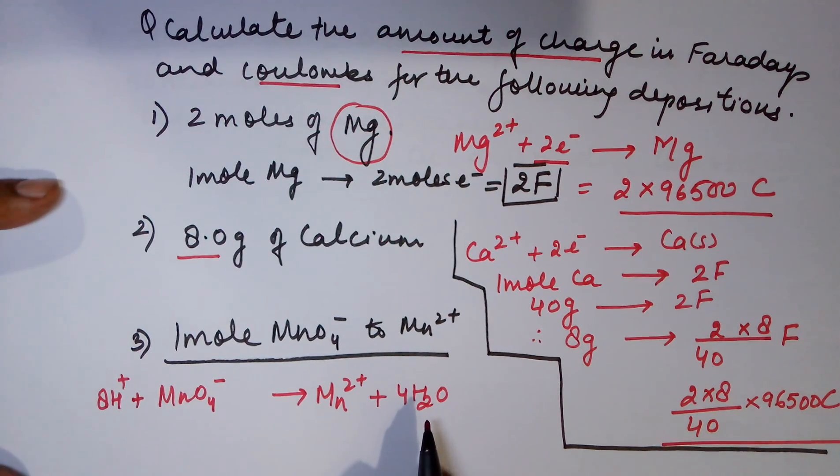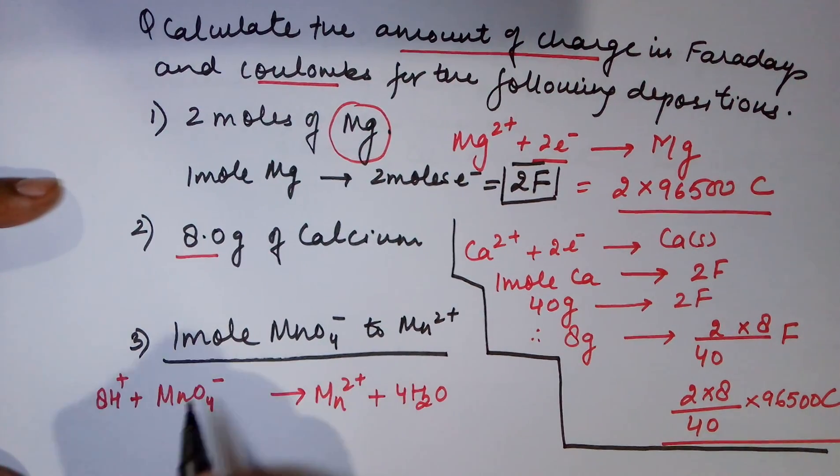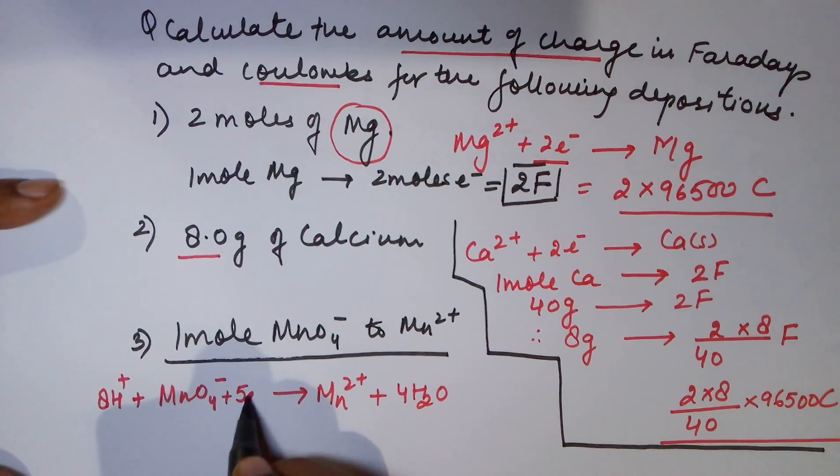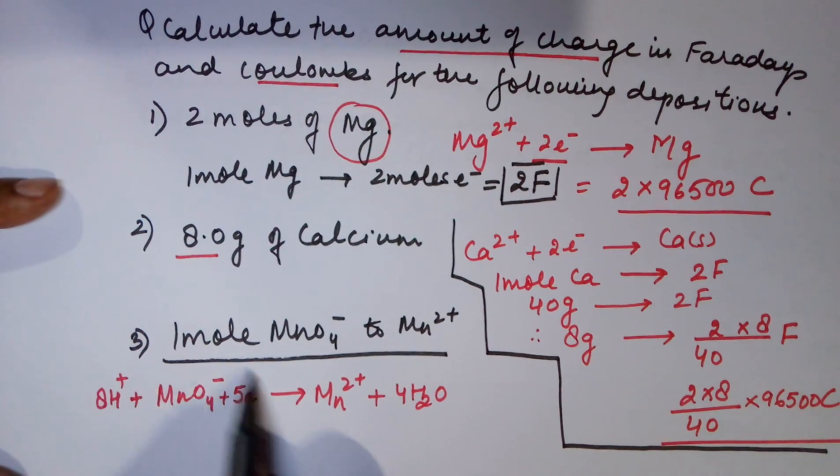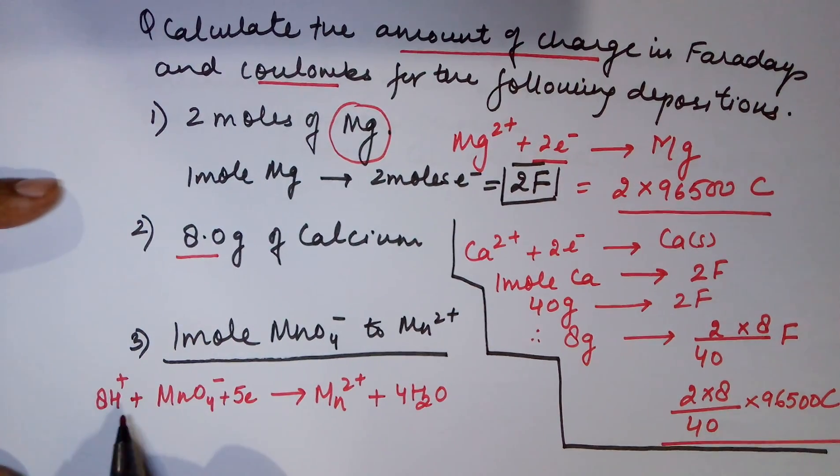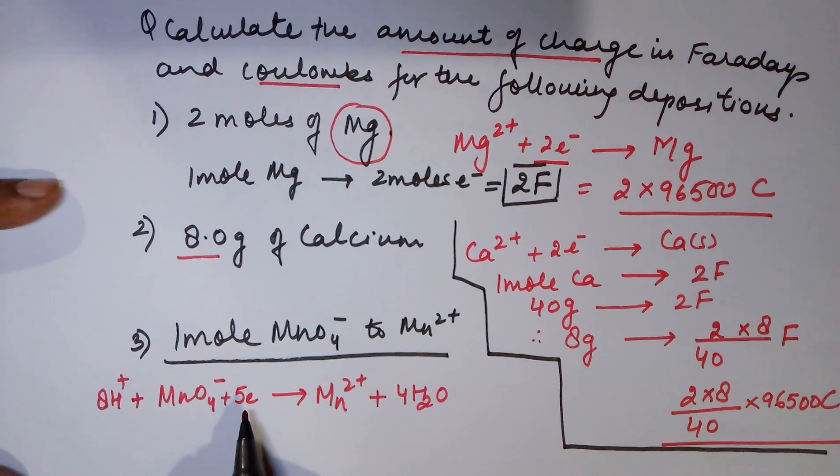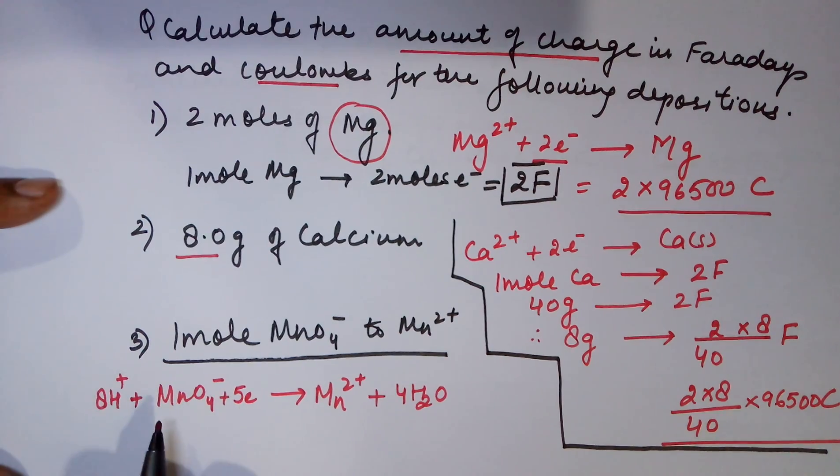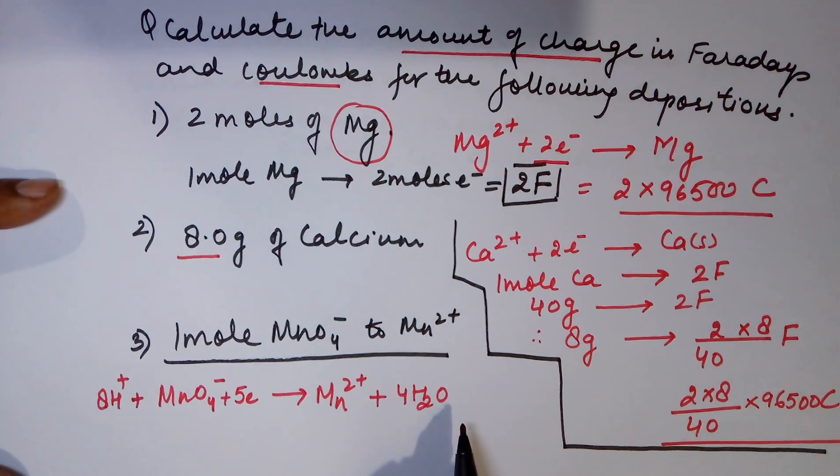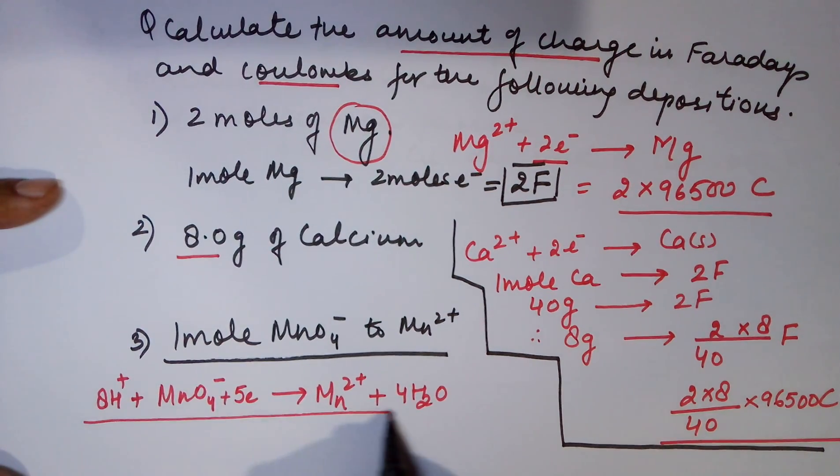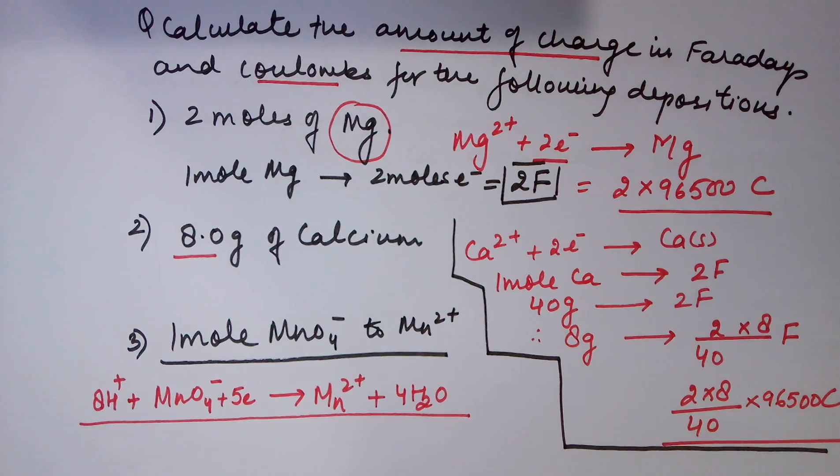Electrons being negative in charge, if I add 5 electrons here, the charge left here would be +2. Because it was originally 7 plus and now you have 5 electrons added to it. So the net charge here becomes 2 plus and 2 plus is the charge here. So this is your balanced chemical equation.